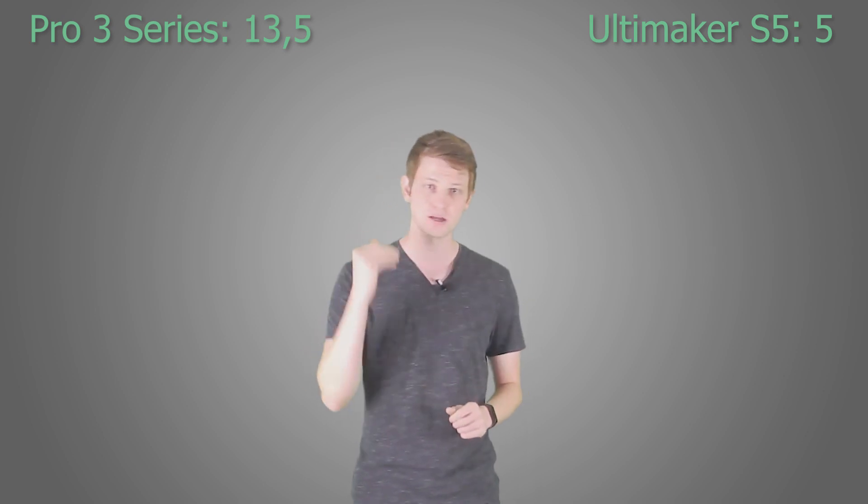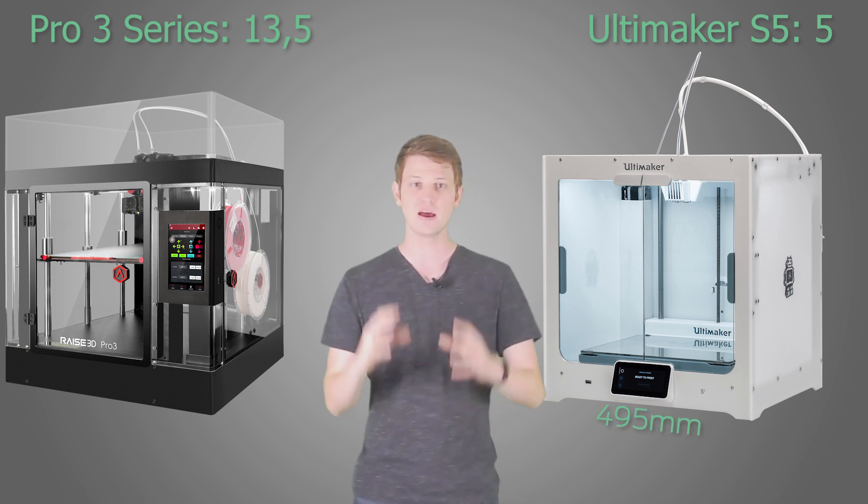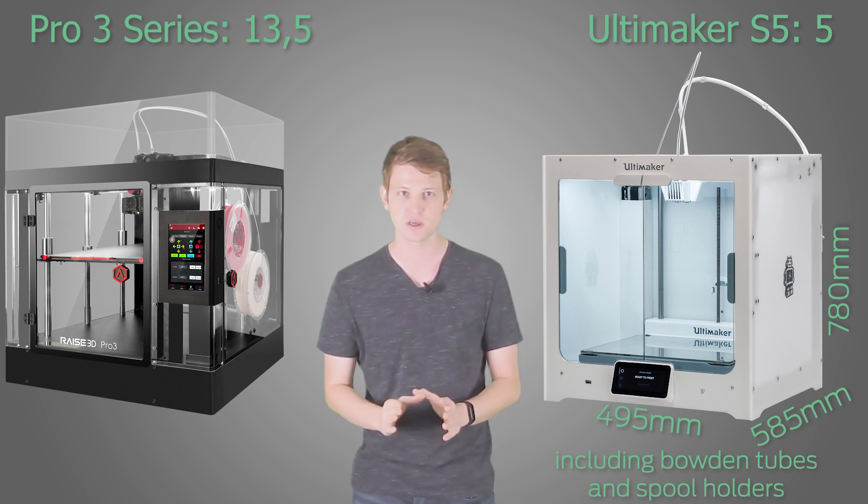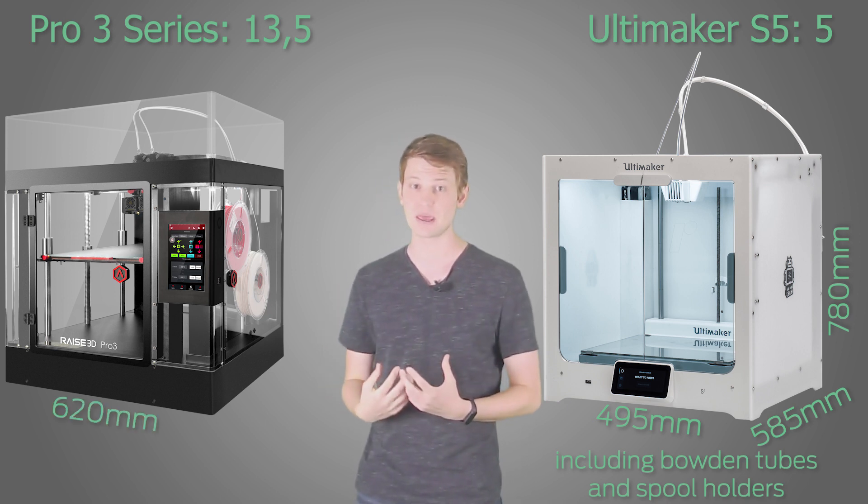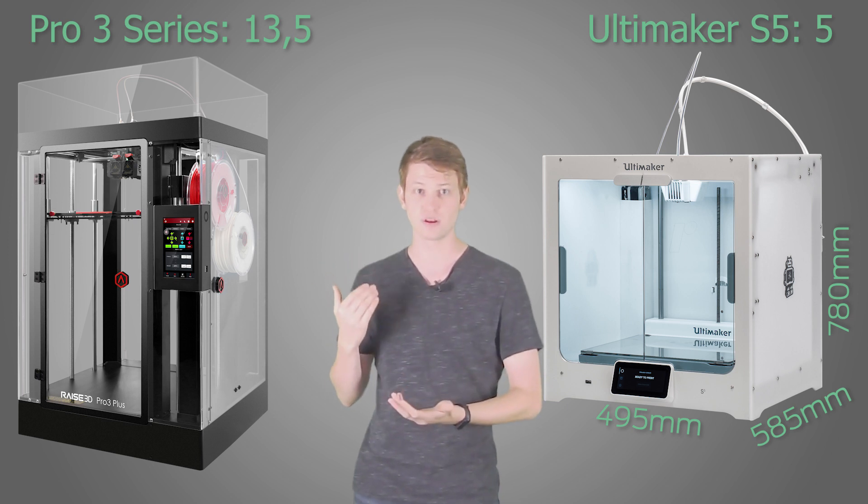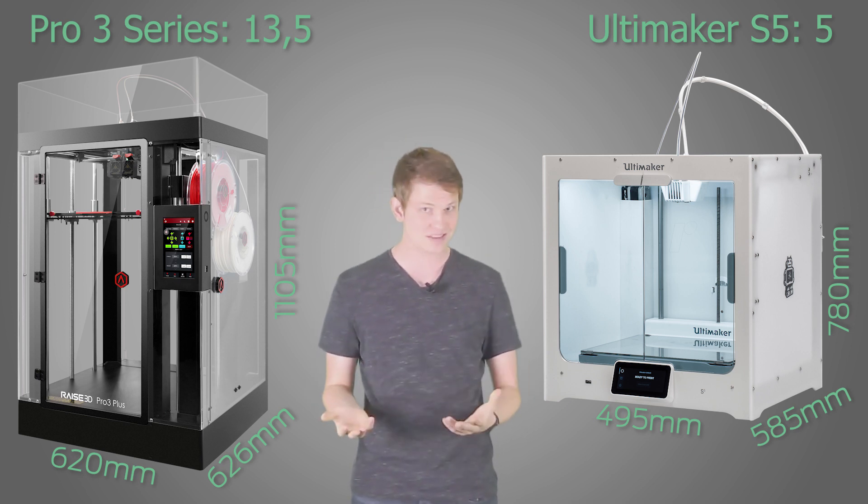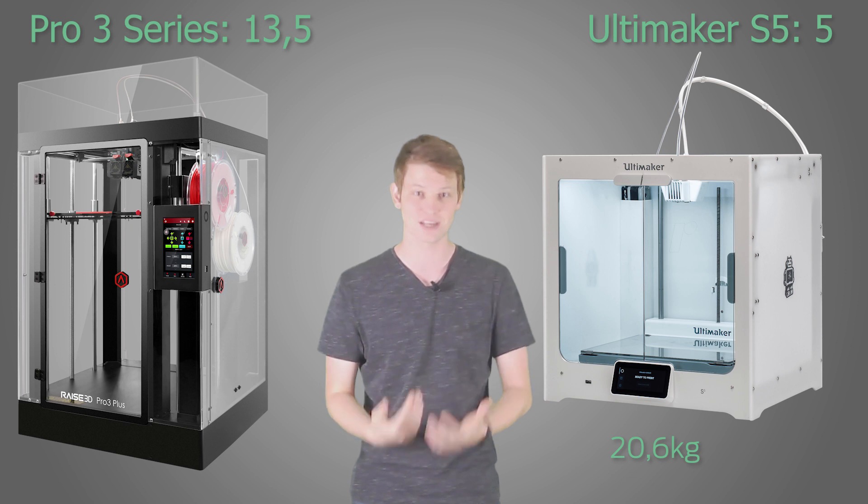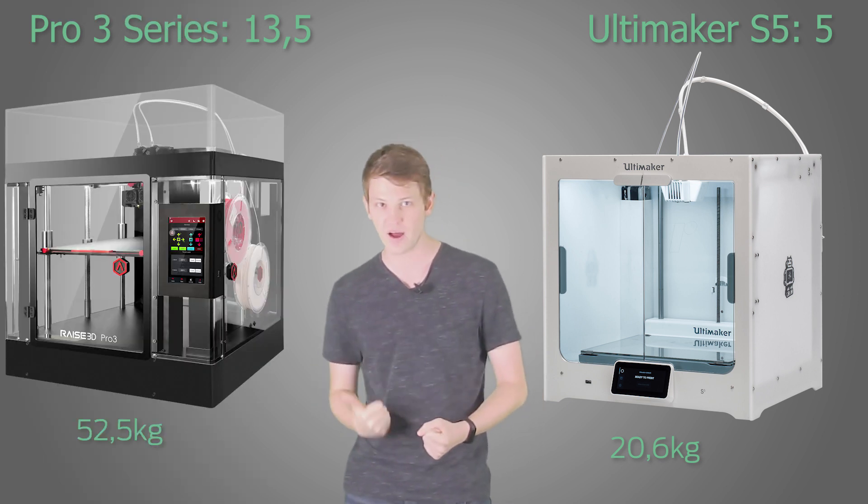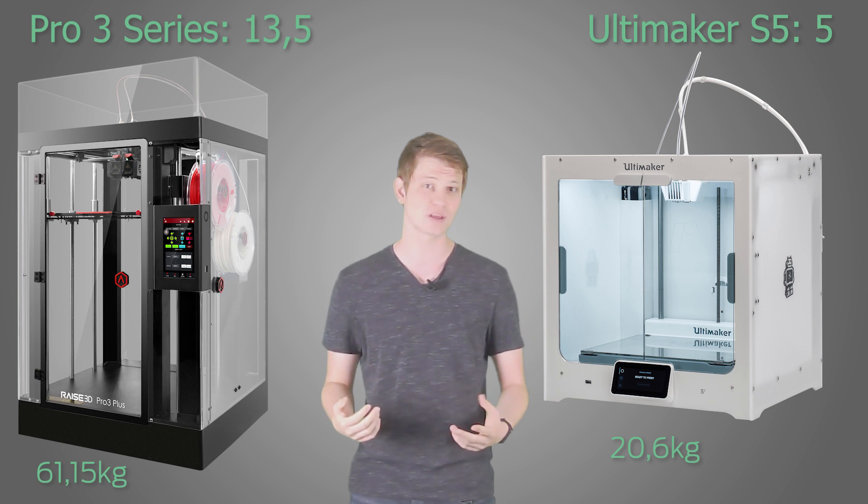Last, but definitely not least, let's talk machine dimensions. The S5 has an impressively small form factor at just 495 x 585 x 780 mm. Compared to the Pro 3 with 620 x 626 x 760 mm, this is quite a significant difference. The Plus version then comes in at 620 x 626 x 1105 mm. And in terms of mass, the S5 only weighs 20.6 kilograms. The Pro 3 tips the scales at 52.5 with the Pro 3 Plus having a whopping 61.15 kilograms to its name. That's not something you can lift alone. So if you need to travel with your printer, have to move it frequently, or anything like this, the Ultimaker S5 is definitely your friend.